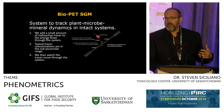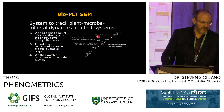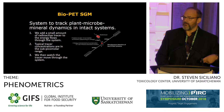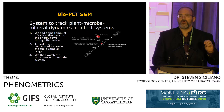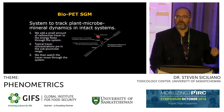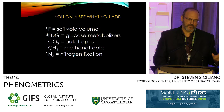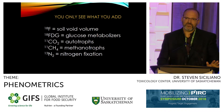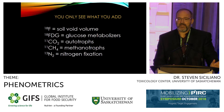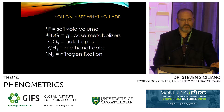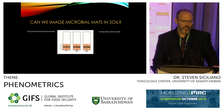PET imaging works by adding a radio tracer that decays releasing a positron, which then releases a gamma ray that you can backtrack to locate activity—basically tracking where carbon and nitrogen are going in a plant. You add it at such low levels—10 to the minus 15 molar—that you don't disturb the system at all. You can use 18F to look at soil voids, FDG to look at glucose metabolizers, 11CO2 to look at autotrophs, and also look at methanotrophs and nitrogen fixation.